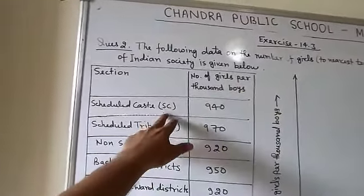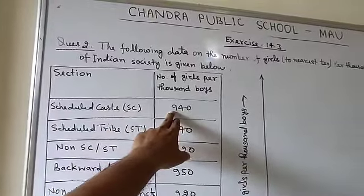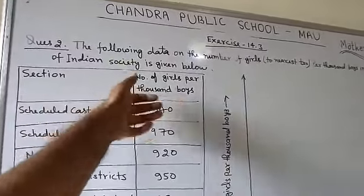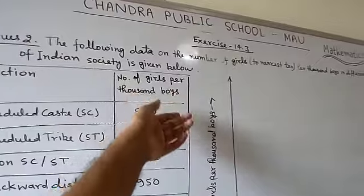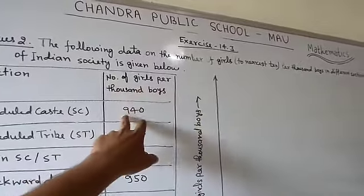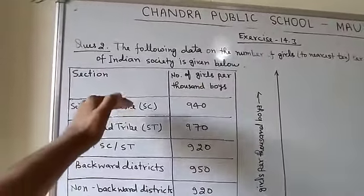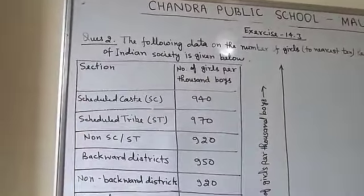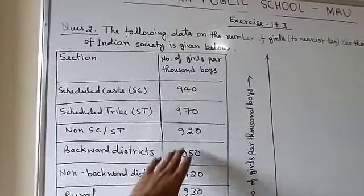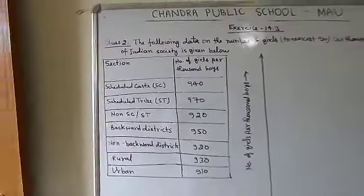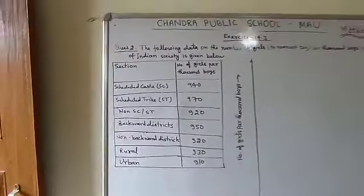You are going to get a table where the section is given and the number of girls per thousand boys is given. For example, Scheduled Caste shows 940, which means if there are 1000 boys, there are 940 girls. The data is given similarly for different sections.